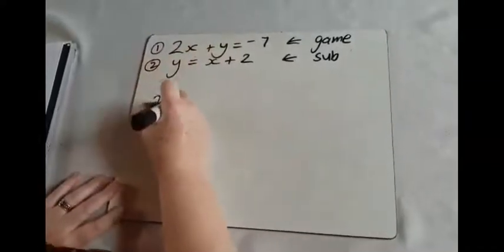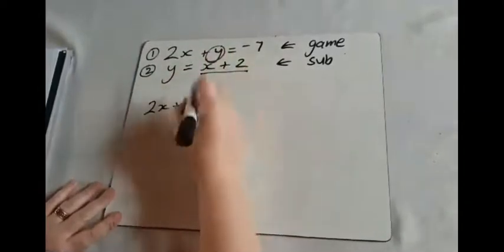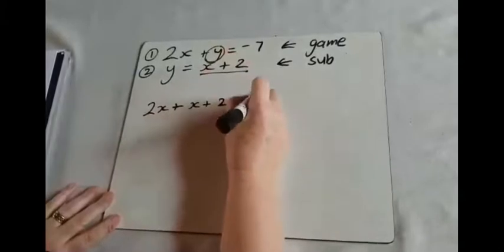So we've got 2x plus, instead of writing y, we write what the value of y is, which is x plus 2 equals negative 7.